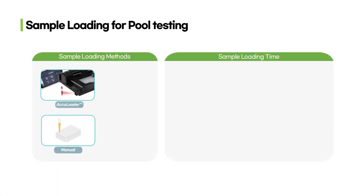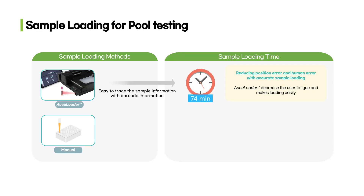All pool testing with 480 samples is complete. The AccuLoader pool testing takes about 74 minutes. AccuLoader traces sample information by scanning the sample barcodes and automatically guides the user to the accurate well position while counting the number of samples. Therefore, users do not need to feel fatigued due to attention to loading samples in the accurate position, and position errors and human errors are prevented.